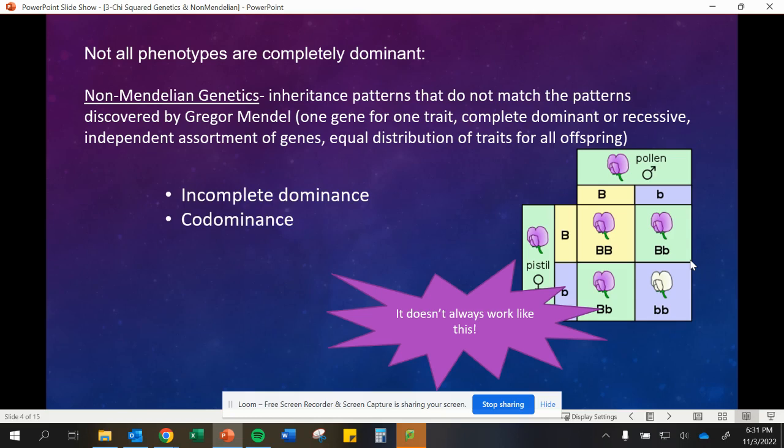Incomplete dominance can happen, as well as codominance, which we'll talk about today. Linked traits we're actually going to talk about next video, but it's also something that can affect the inheritance of traits, as well as sex-linked traits. Polygenic traits, so multiple genes affecting a trait, are also going to be examples of non-Mendelian genetics.